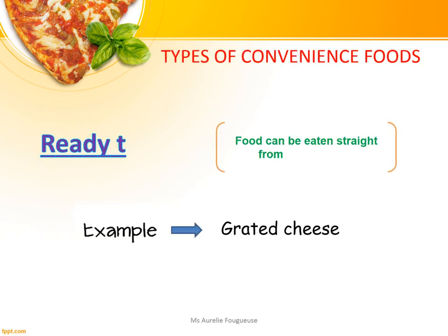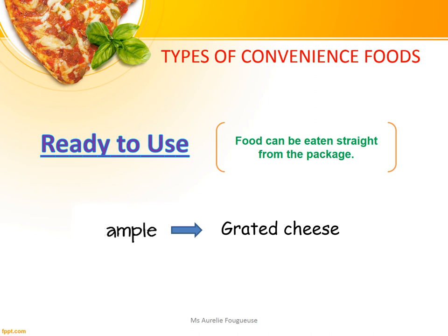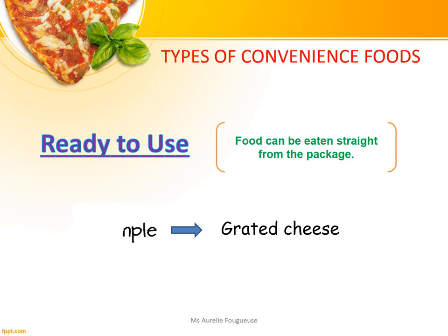The last type of Convenience Food is ready-to-use foods. These foods can be eaten as they are, meaning straight from the package. No cooking or preparation is needed. An example of ready-to-use food is grated cheese.